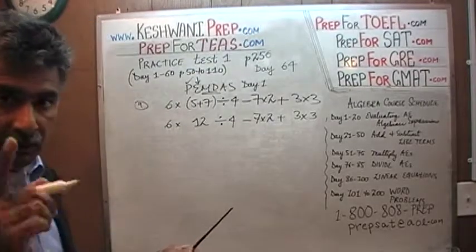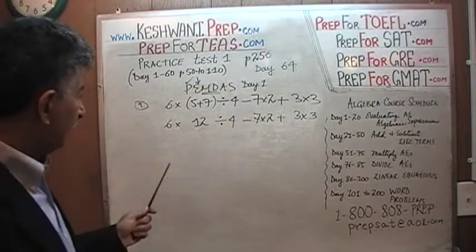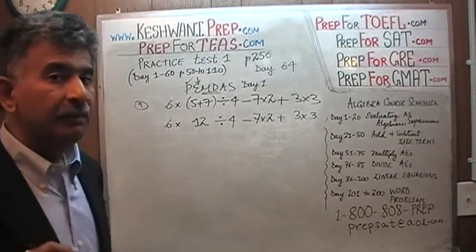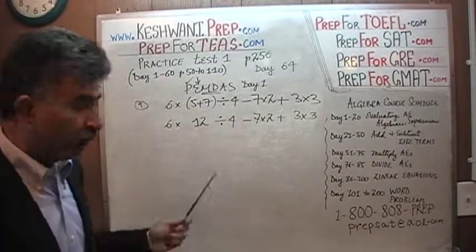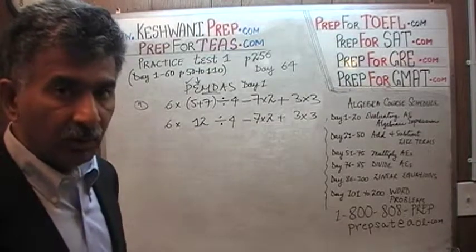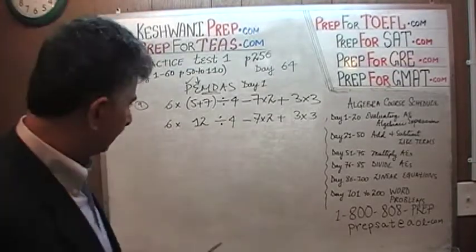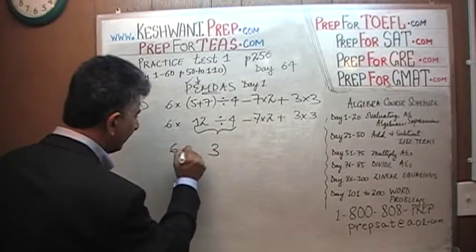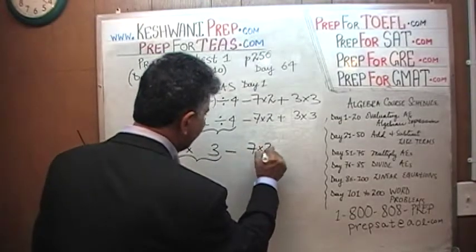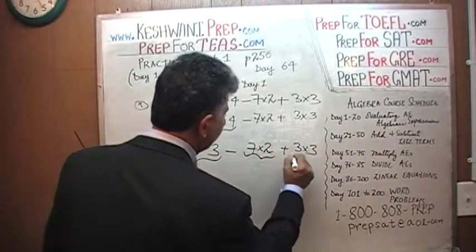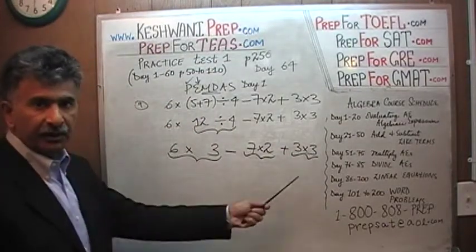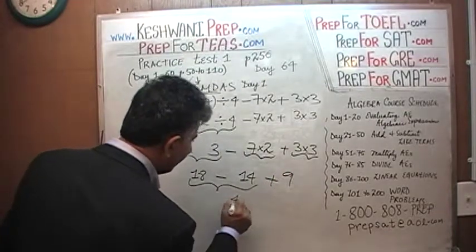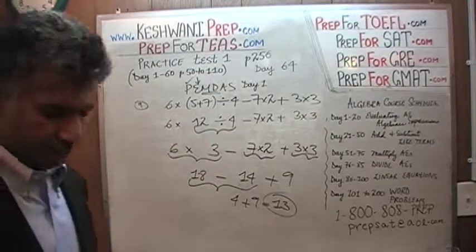Because multiplication and division have the same priority, we have two choices. We can either do 6 times 12 and then divide by 4, but that will be more work. Why make your life miserable? Do the simpler operation first. Let's divide 12 by 4 — 12 divided by 4 is 3. So we end up with 6 times 3, which is much easier. We now have 6 times 3 minus 7 times 2 plus 3 times 3. Doing the multiplications: 6 times 3 is 18, minus 14, plus 9. Then 18 minus 14 is 4, plus 9 gives us the final answer of 13.